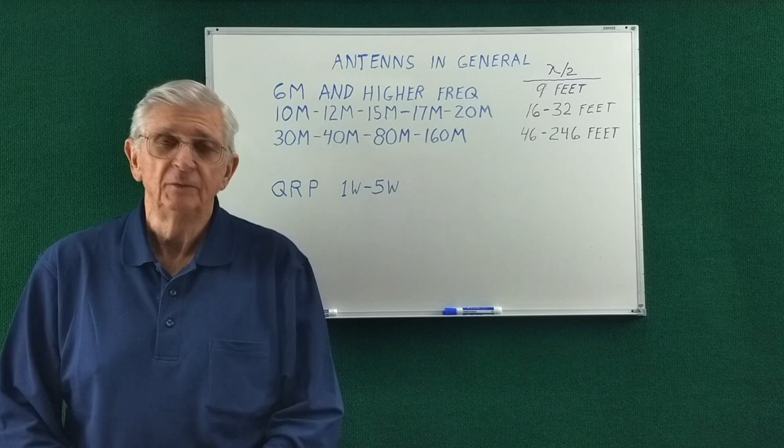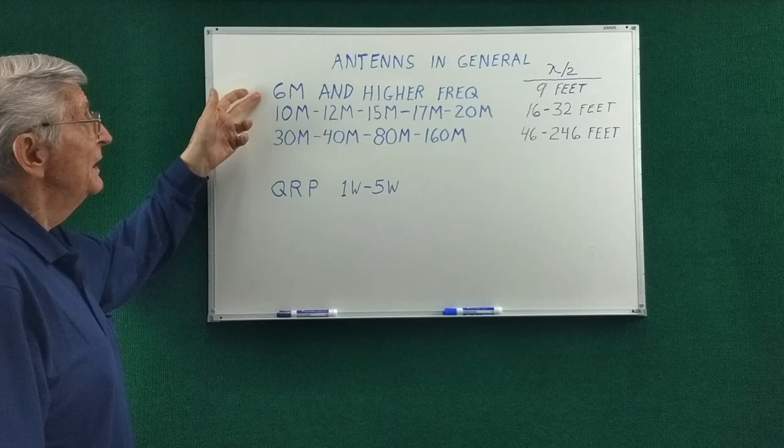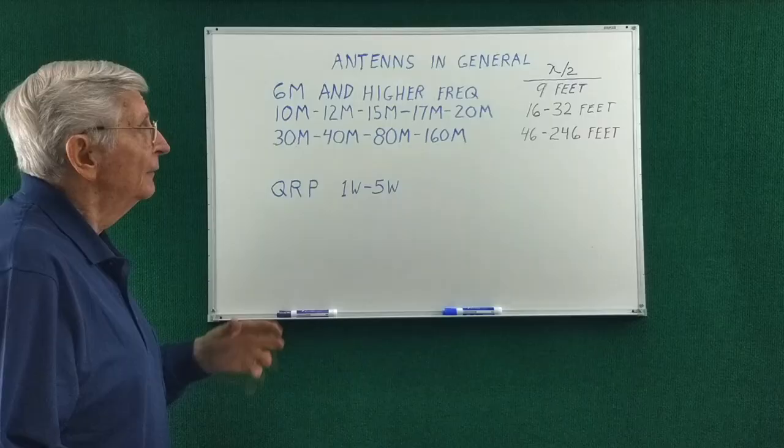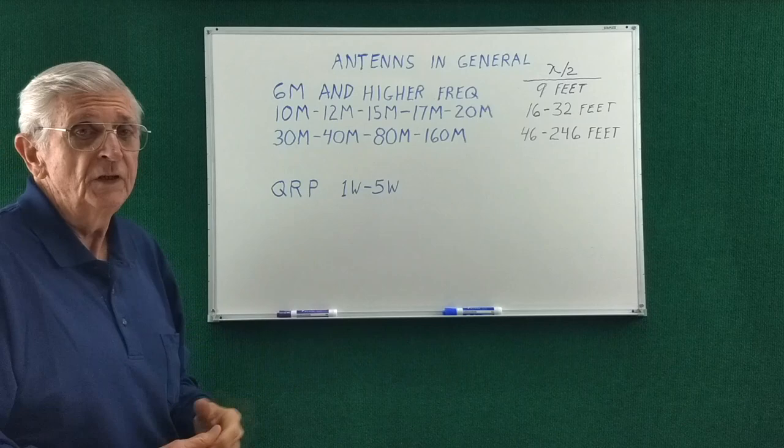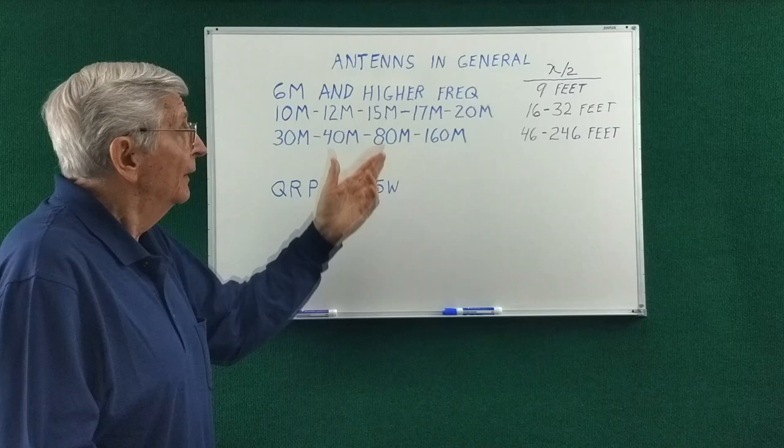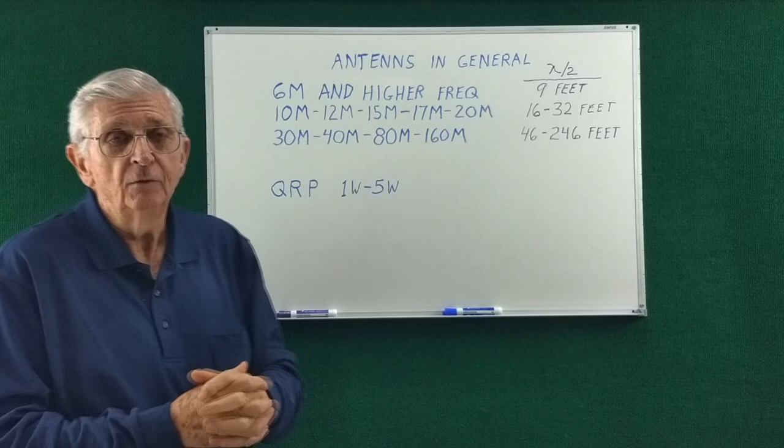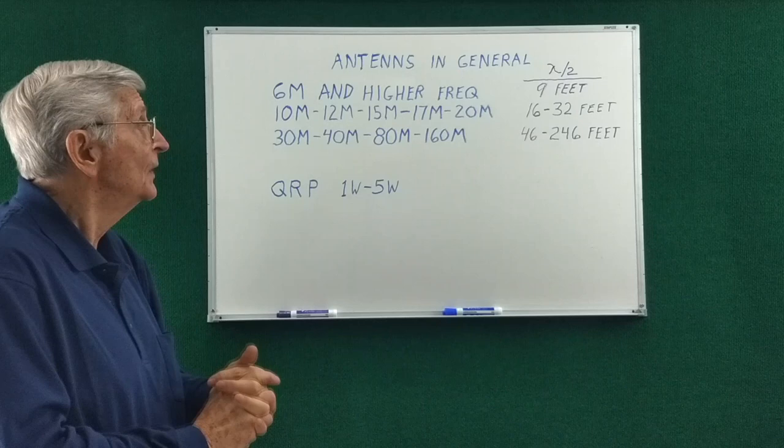Well, before we dive deeply into the mag loop, let's talk a little bit about antennas in general. For six meters and higher frequencies, antennas get pretty small. A half-wave dipole is only nine feet long, so it's easy to make self-supporting. That kind of length can just be stretched across a room, so I don't see any reason to try and include that in a magnetic loop antenna.